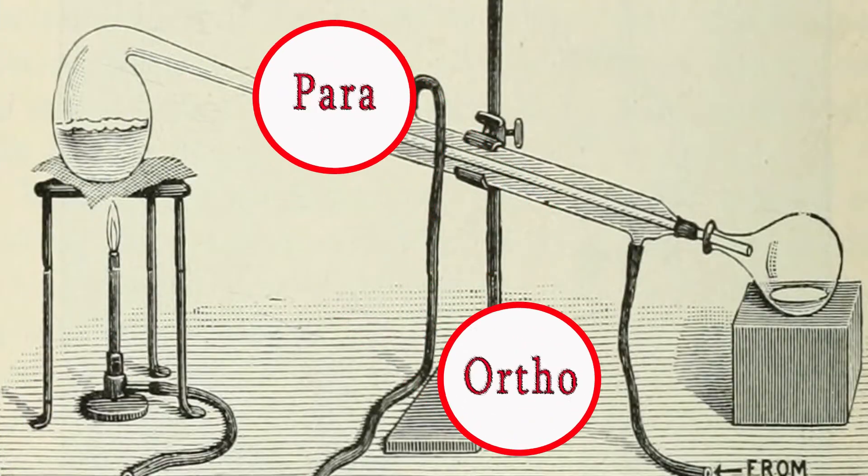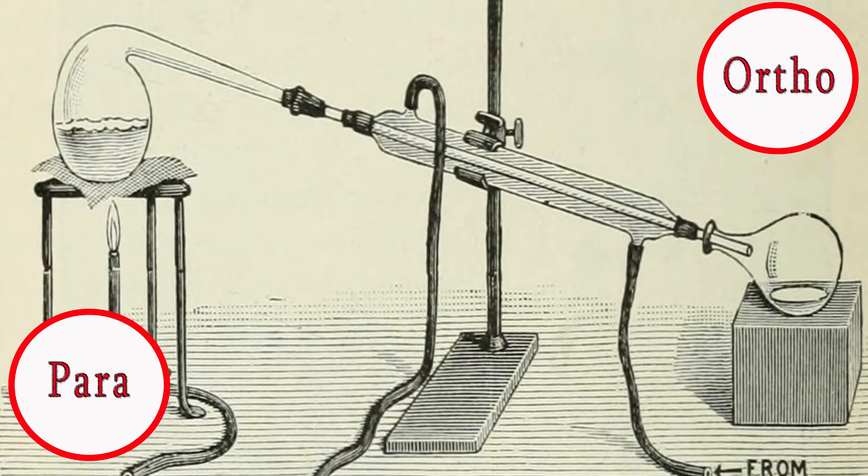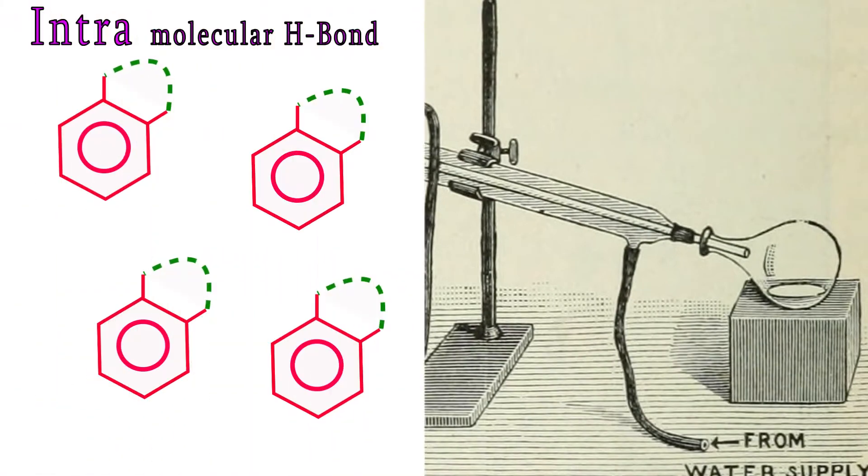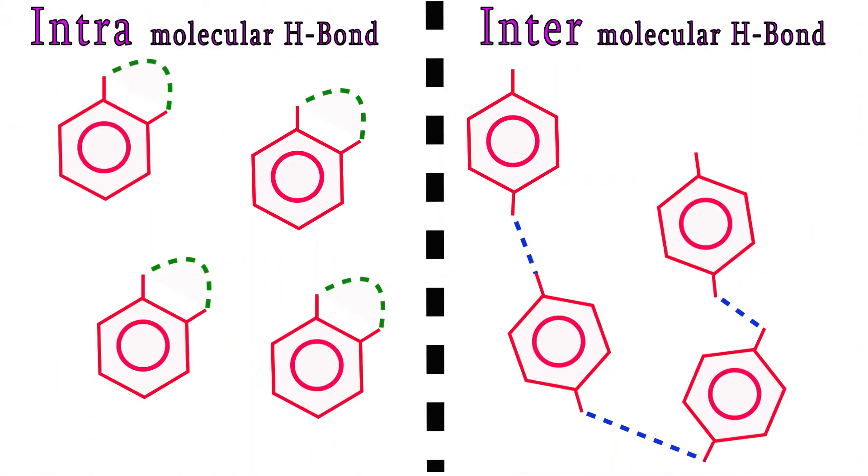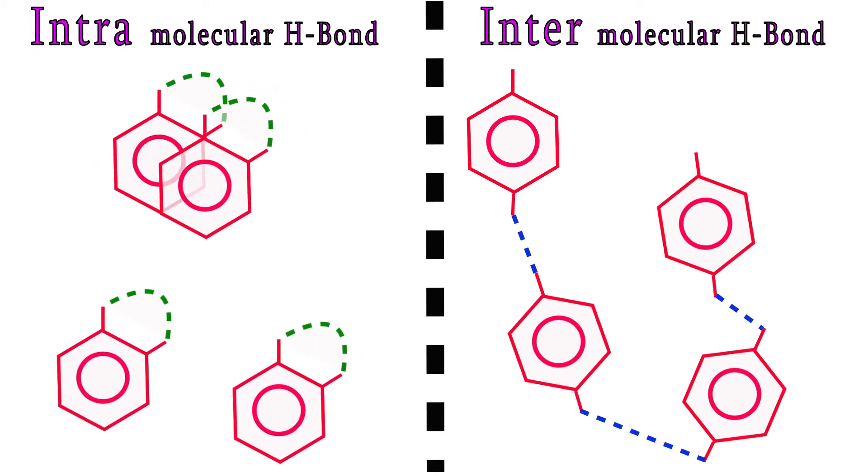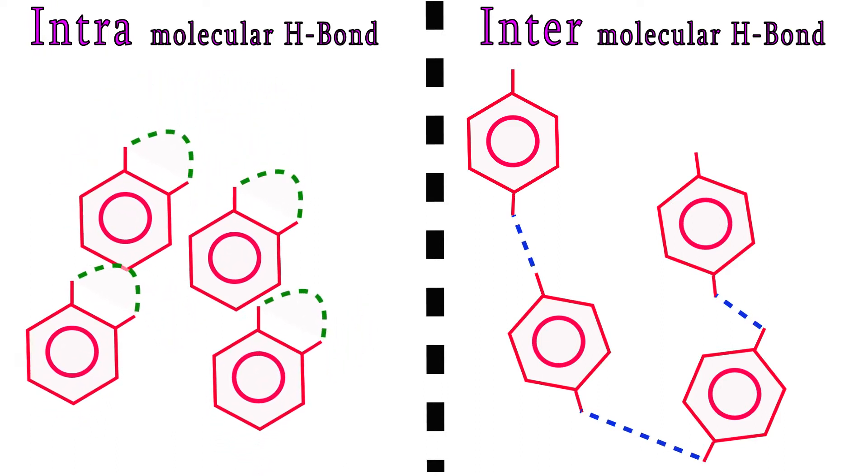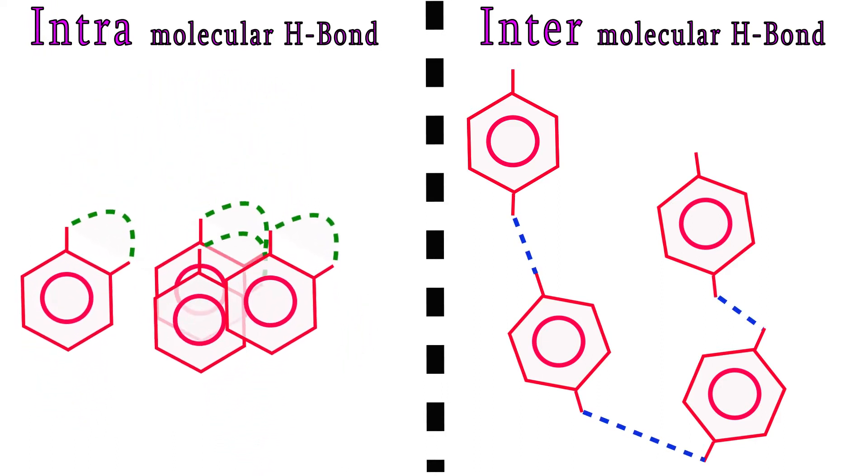Steam distillation could be helpful to separate these two isomers, ortho and para nitrophenols. Boiling points of the nitrophenols differ according to their ability to form intra- and intermolecular hydrogen bonds.